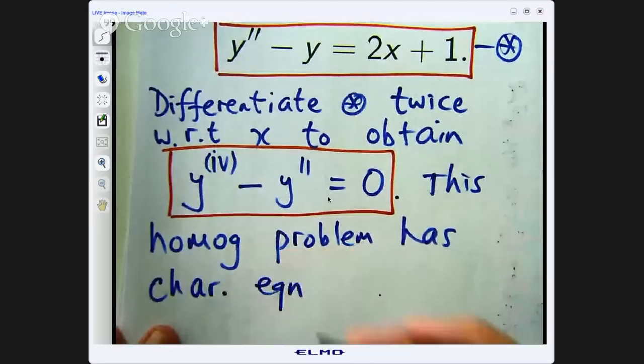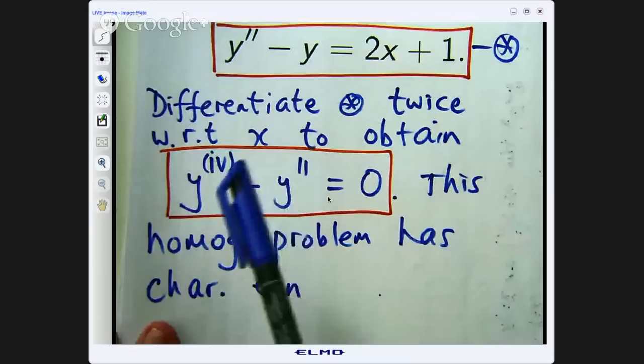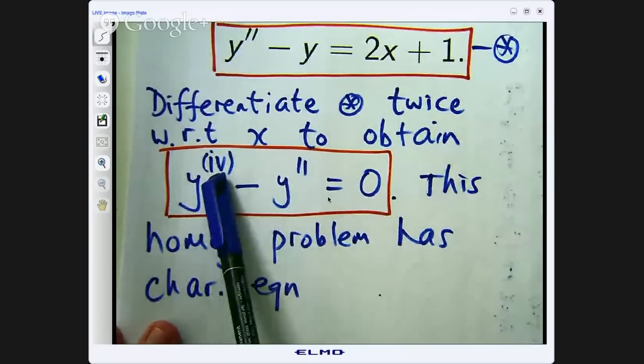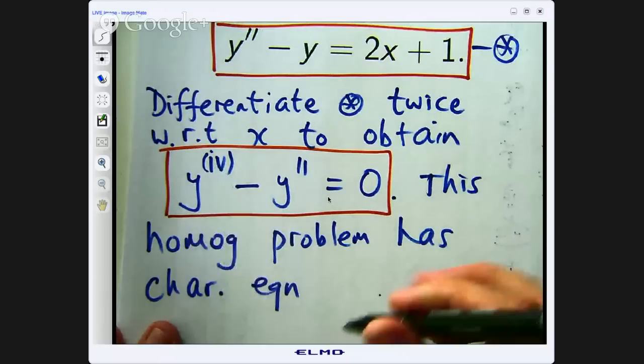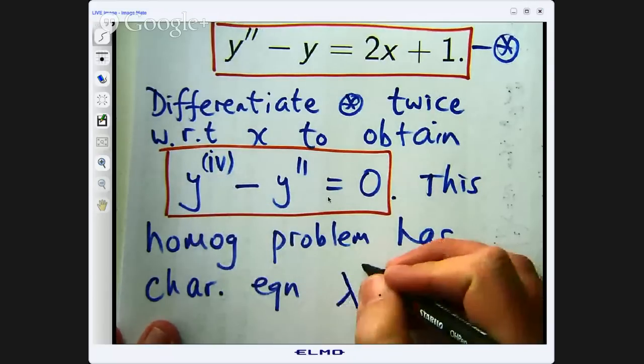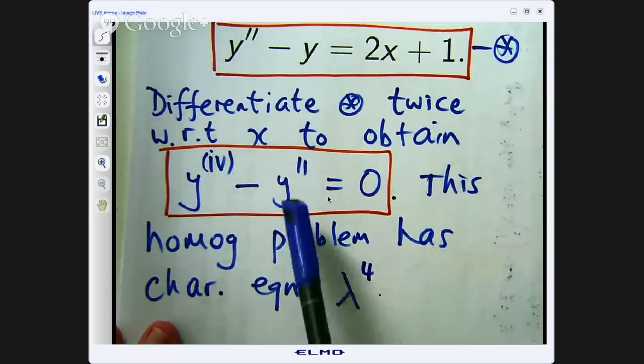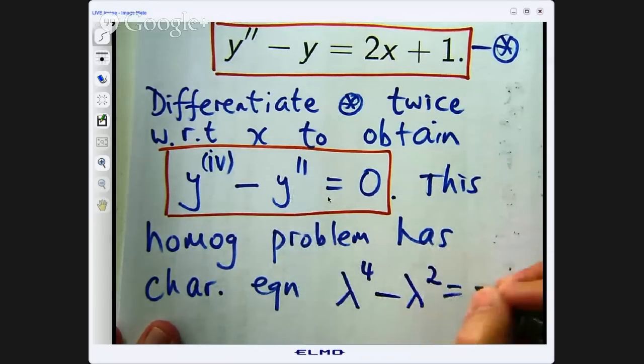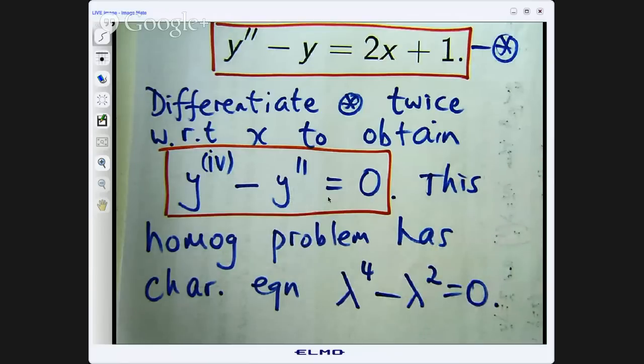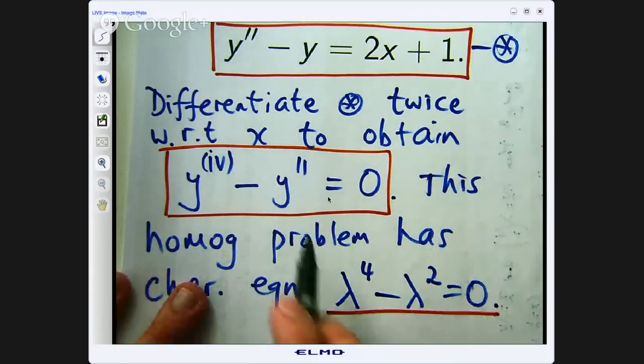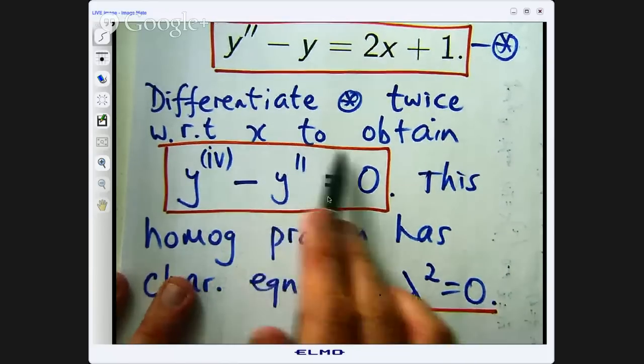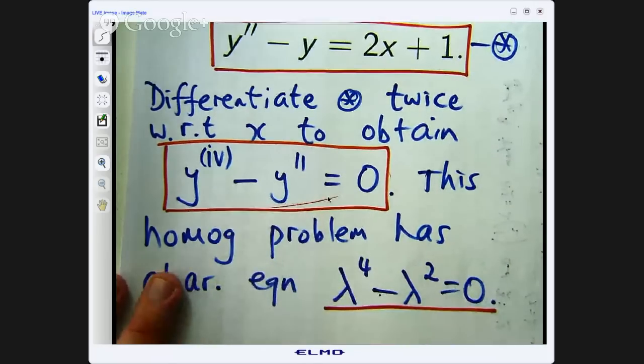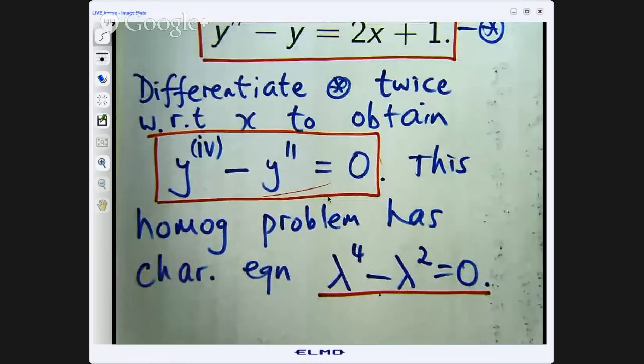So this homogeneous problem has a characteristic equation. What is the characteristic equation associated with this homogeneous problem? Well, instead of a fourth order derivative here it would be power 4, and instead of a second order derivative it would be λ squared. So now it is the same old story of what we have done before. The analysis does not involve a differential equation anymore; it involves solving this polynomial equation.